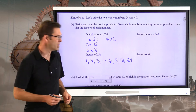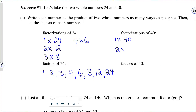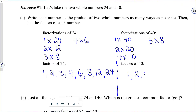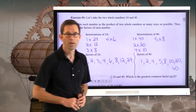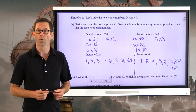Alright, let's get right to it. 40: obviously 1 times 40, 2 times 20, 4 times 10, 5 times 8 — 3, 6, and 7 don't work. So the factors of 40 are: 1, 2, 4, 5, 8, 10, 20, and 40. Both of these numbers have a lot of factorizations, and therefore a lot of factors.